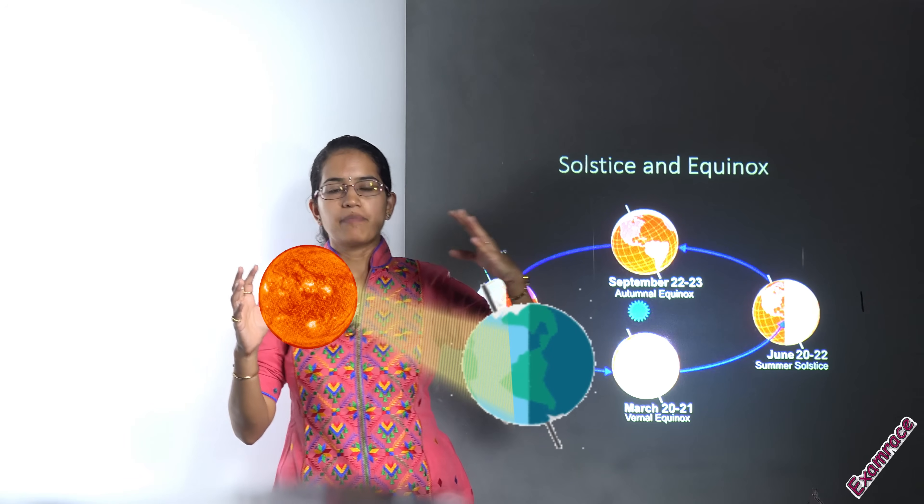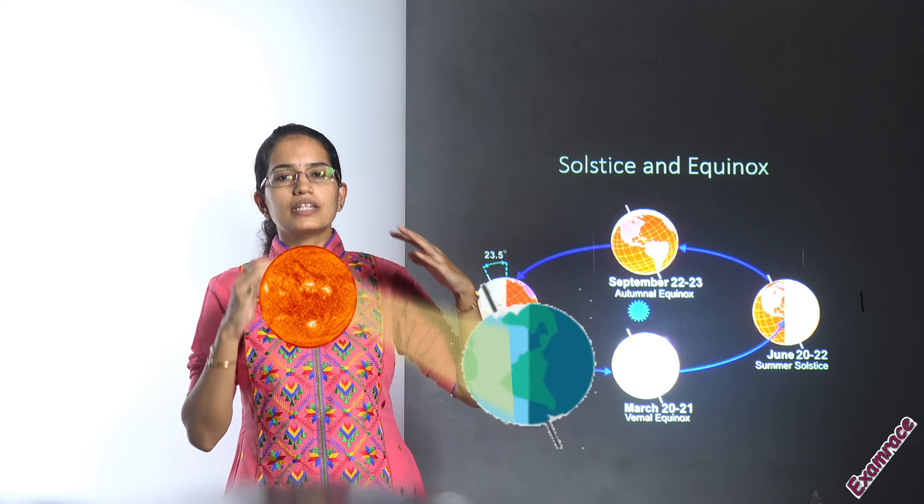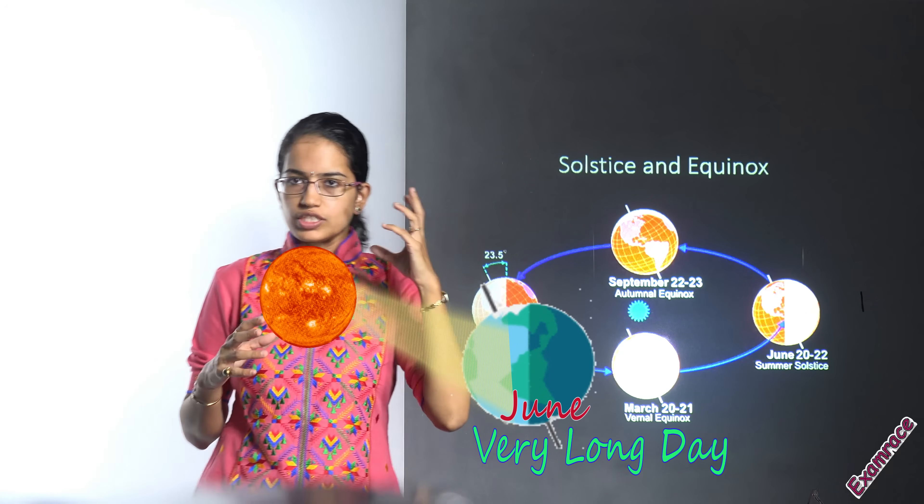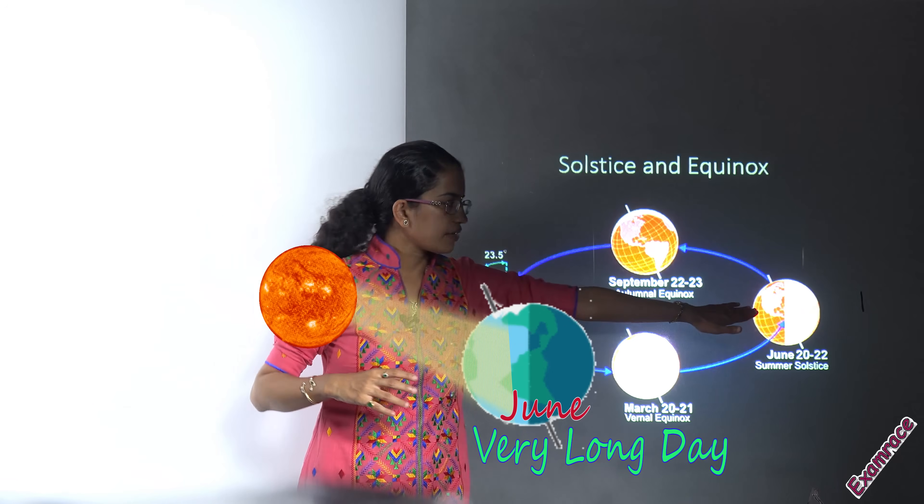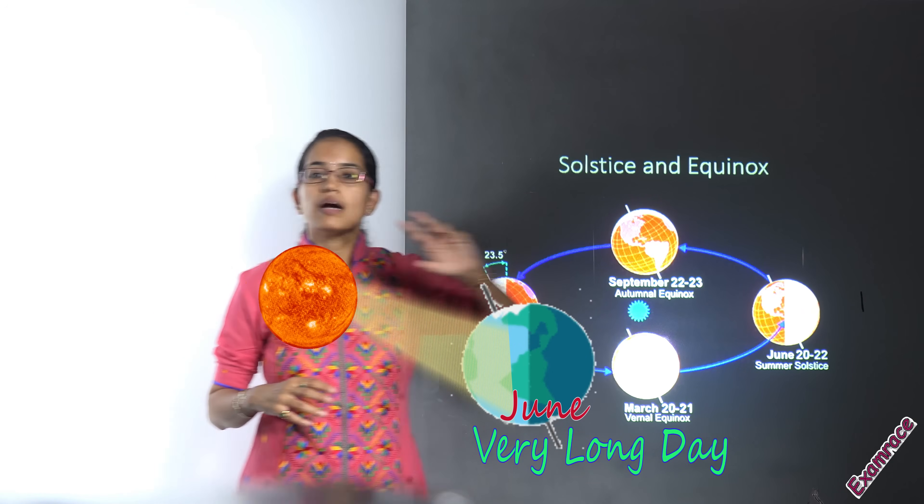So in the Northern Hemisphere, what happens is during the summer months, that's during predominantly the June month, you would have a very long day and a very short night. That's the point very far from the sun and this is what is known as a summer solstice.